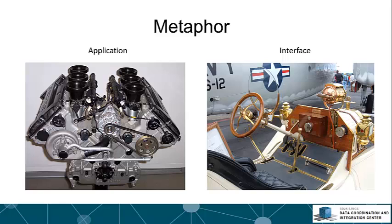On the left, we have the application — a car engine. It represents decades of combined engineering experience and knowledge. It's complex. On the right, we have a car's API: a steering wheel, pedals, a gear shifter.